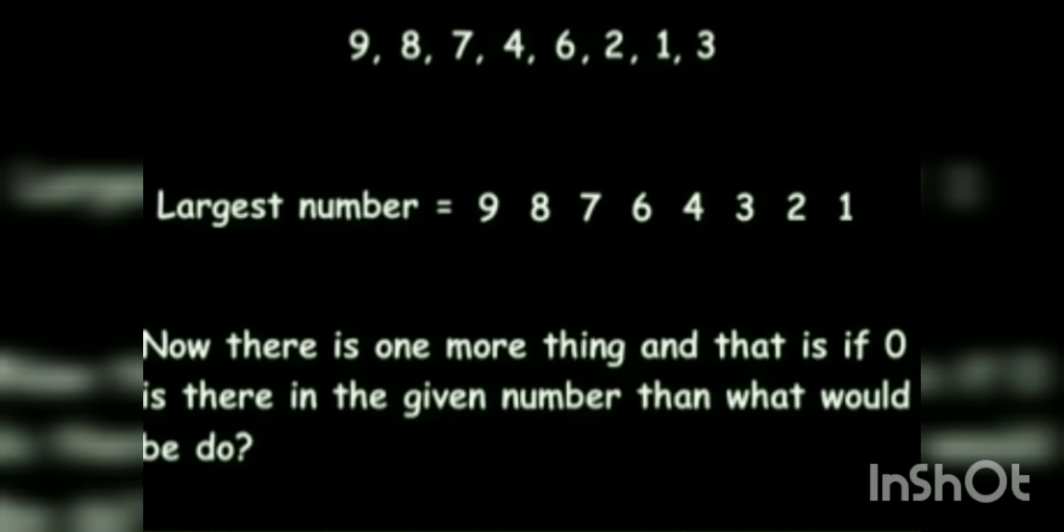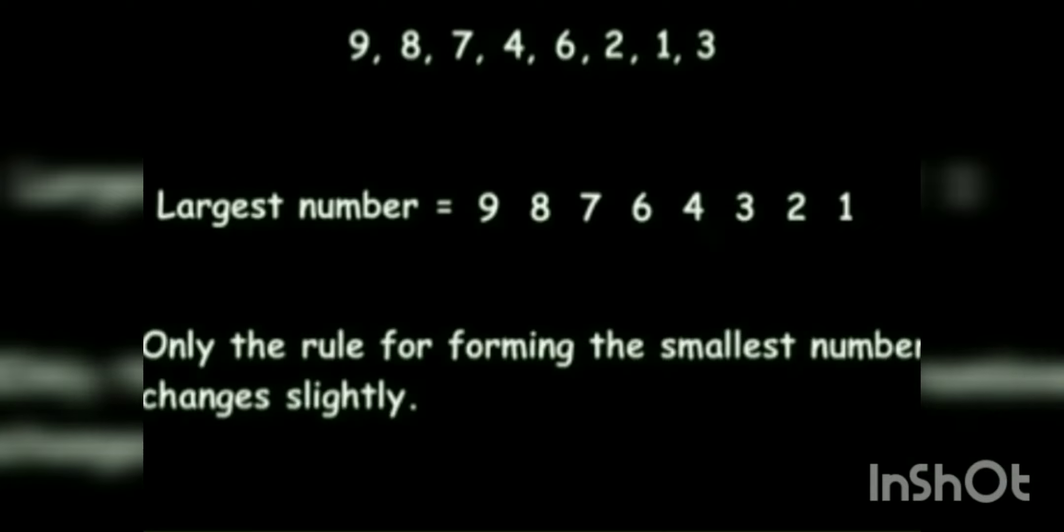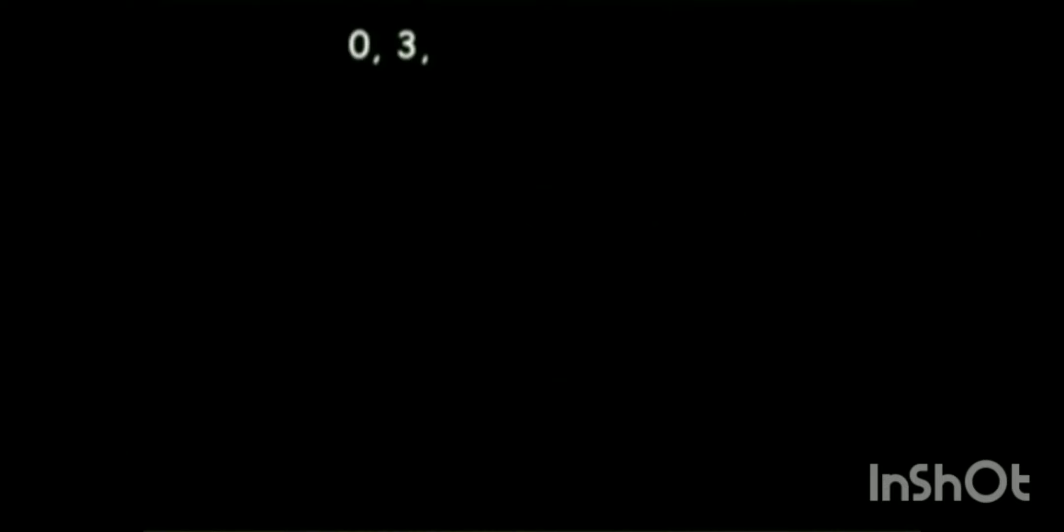Now, there is one more thing and that is if 0 is there in the given number, then what would we do? Only the rule for the forming smallest number changes slightly. To understand, let us take an example.